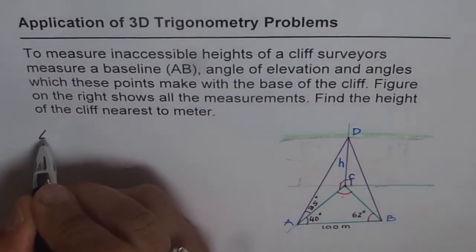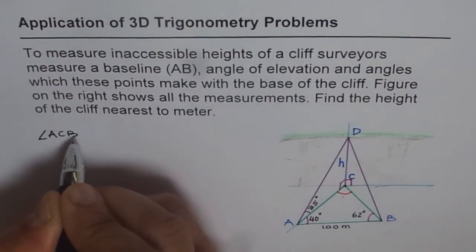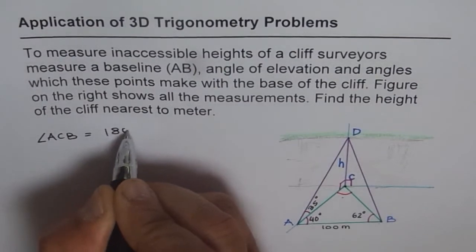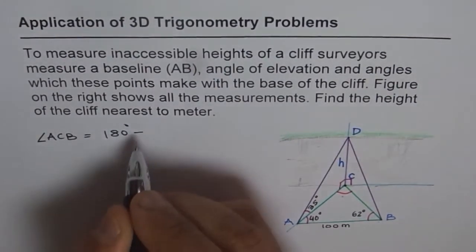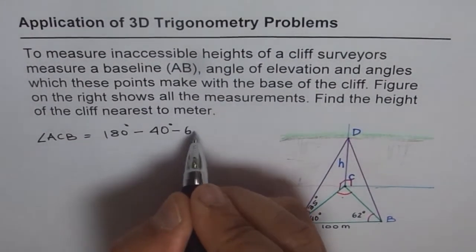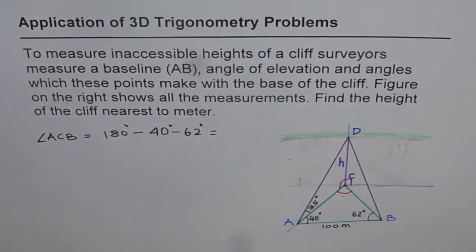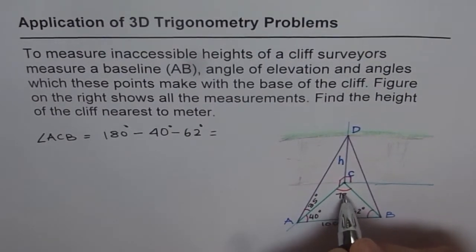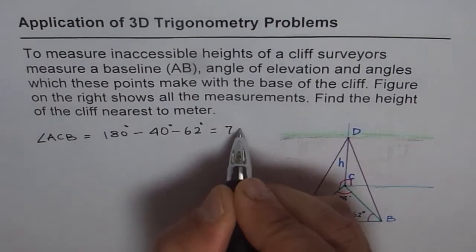And we say angle ACB equals to 180 degrees minus 40 degrees minus 62 degrees. Sum of the three angles for a triangle is always 180. So we get 180 minus 40 minus 62. And we get 78 as our answer. So this is 78 degrees. That is the first step.